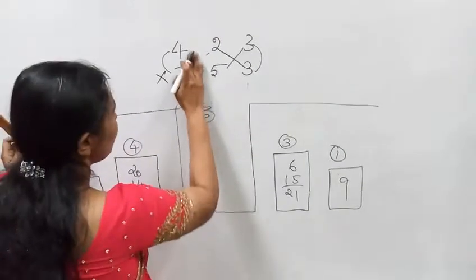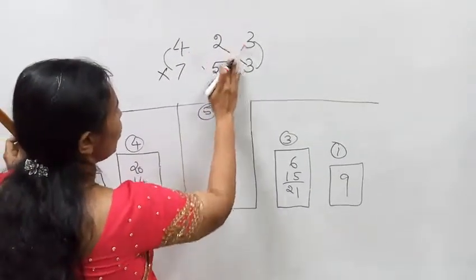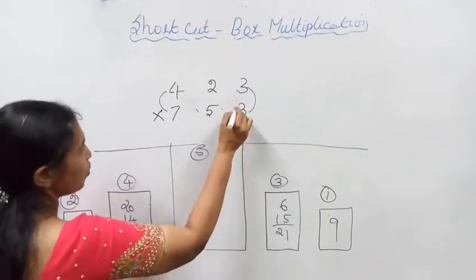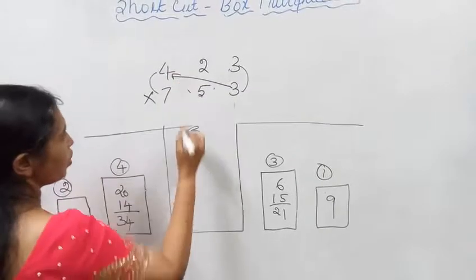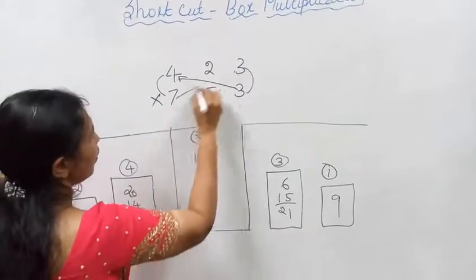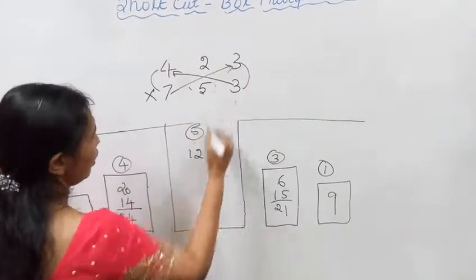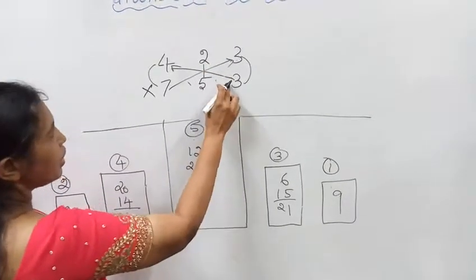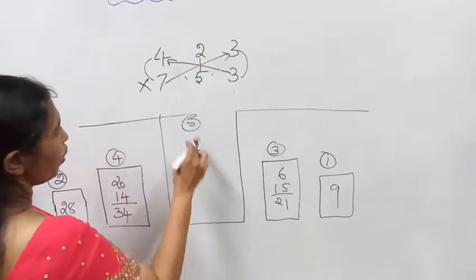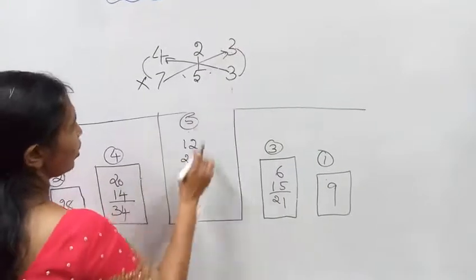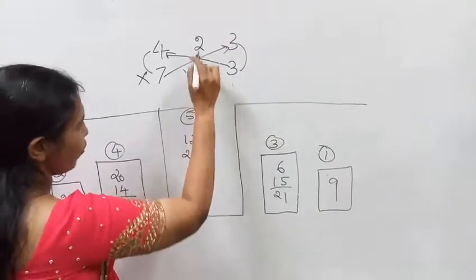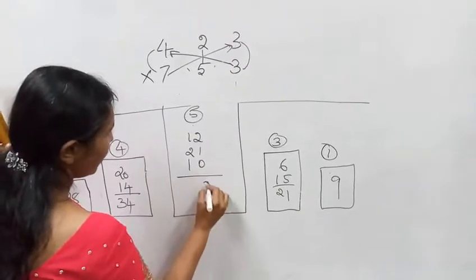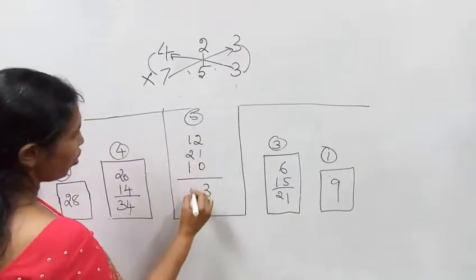Now I am going to do the last one — the 5th box. Which one do you have to multiply? 3 fours are 12, 7 threes are 21. Then the straight one: 5 twos are 10. Adding: 12 plus 21 plus 10 gives 43.